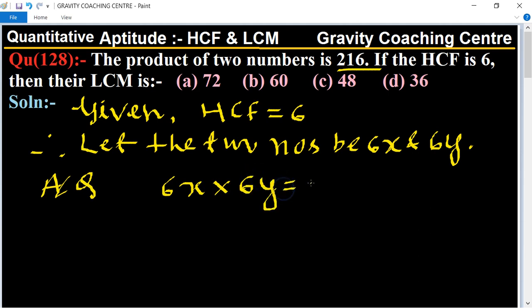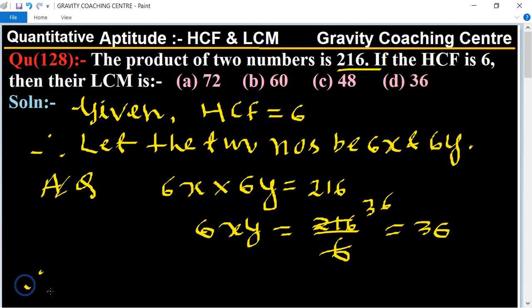So 6xy equal to 216 upon 6, so 6xy equal to 36. Therefore LCM of the two numbers.